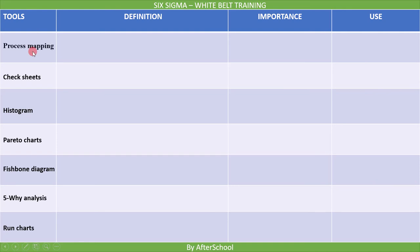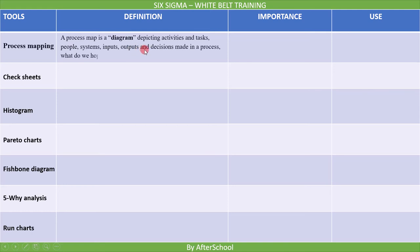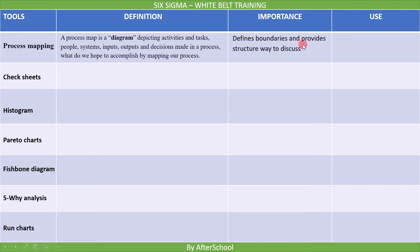The first tool is Process Mapping. A process map is a diagram depicting activities and tasks, people, systems, inputs, outputs, and decisions made in a process. It is important because it defines the boundaries for the process and provides a structured way to discuss the process and obtain stakeholder consensus on how the process operates today. It is used when we are working with a process.